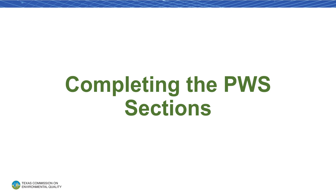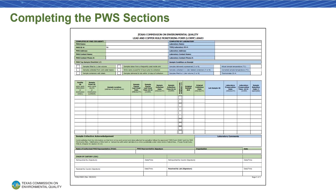First, we'll walk through how to complete the section for public water systems — the sections marked in green. This is what the front of Form 20683 looks like.